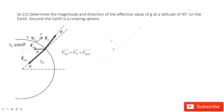Welcome to my channel. I'm Zhang Jingxu. Let's look at problem 21 in chapter 6. In this one, we need to find the effective value of g at the latitude of 45 degrees.